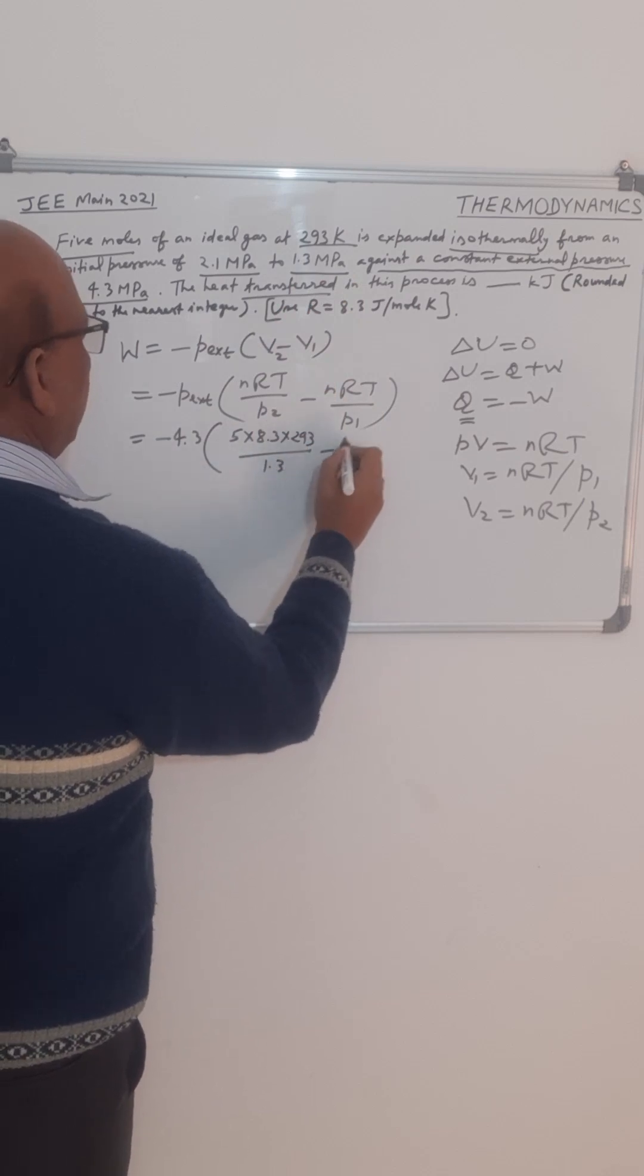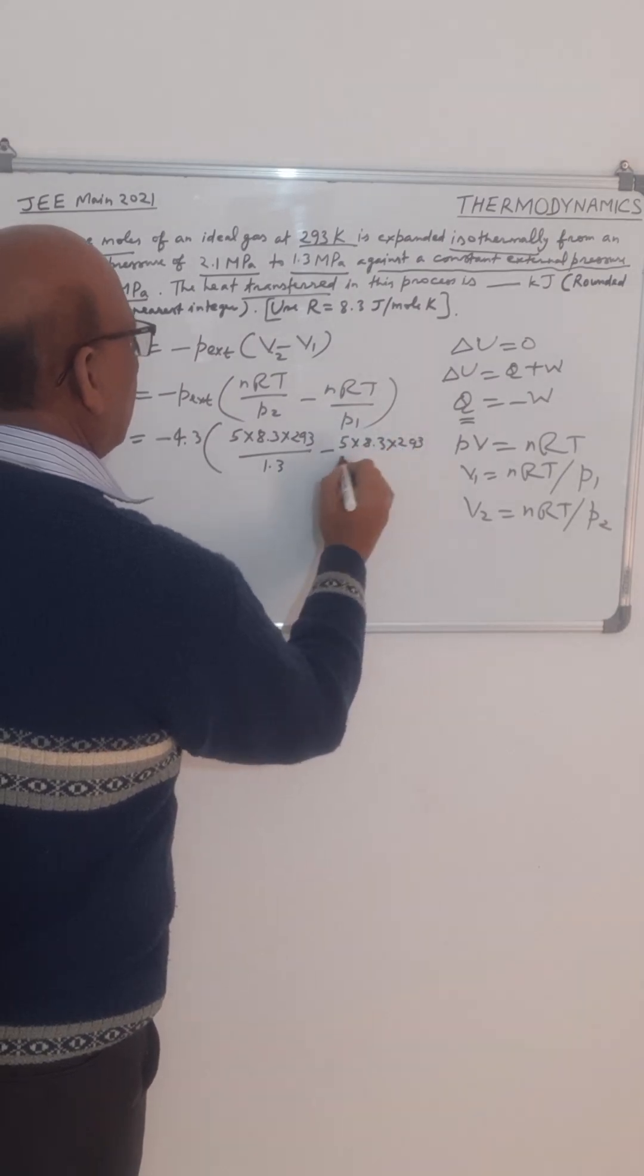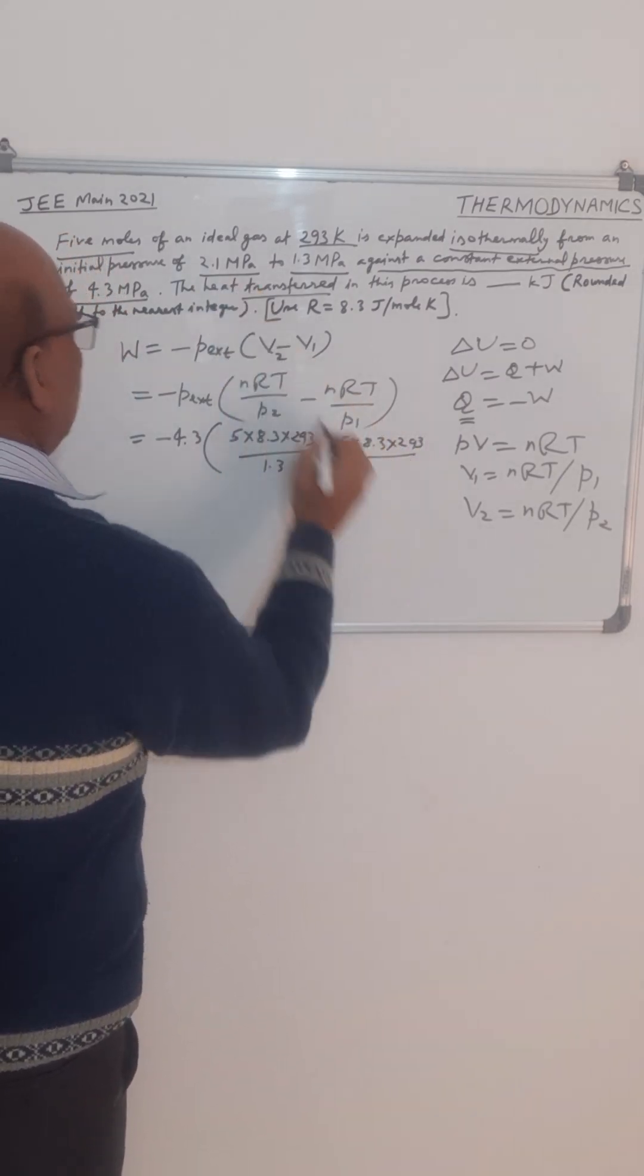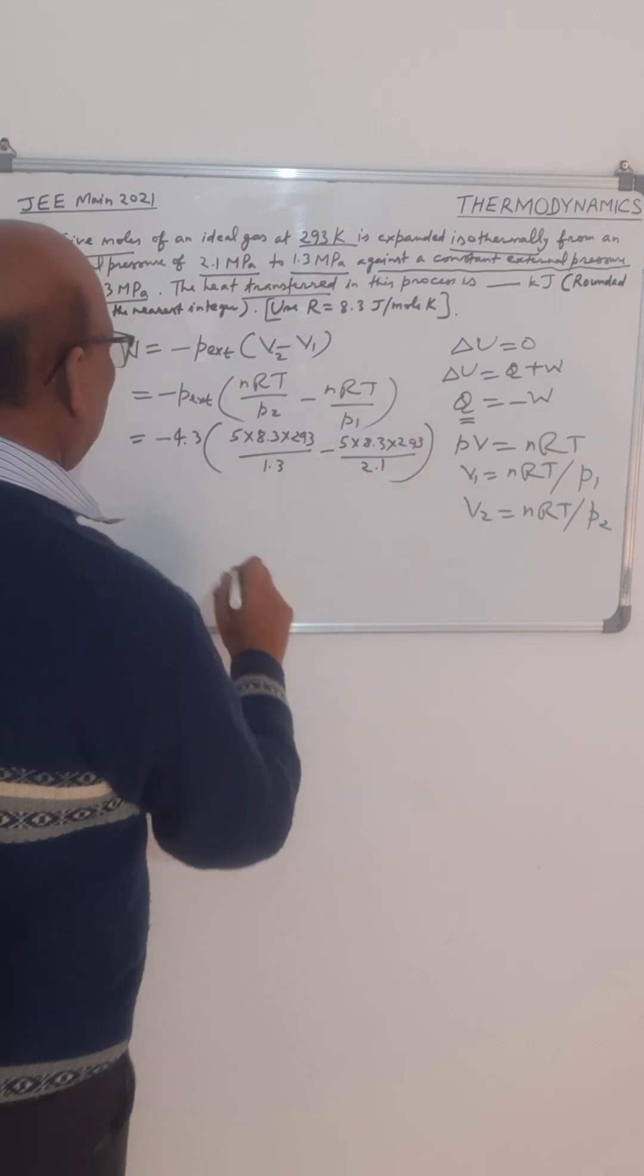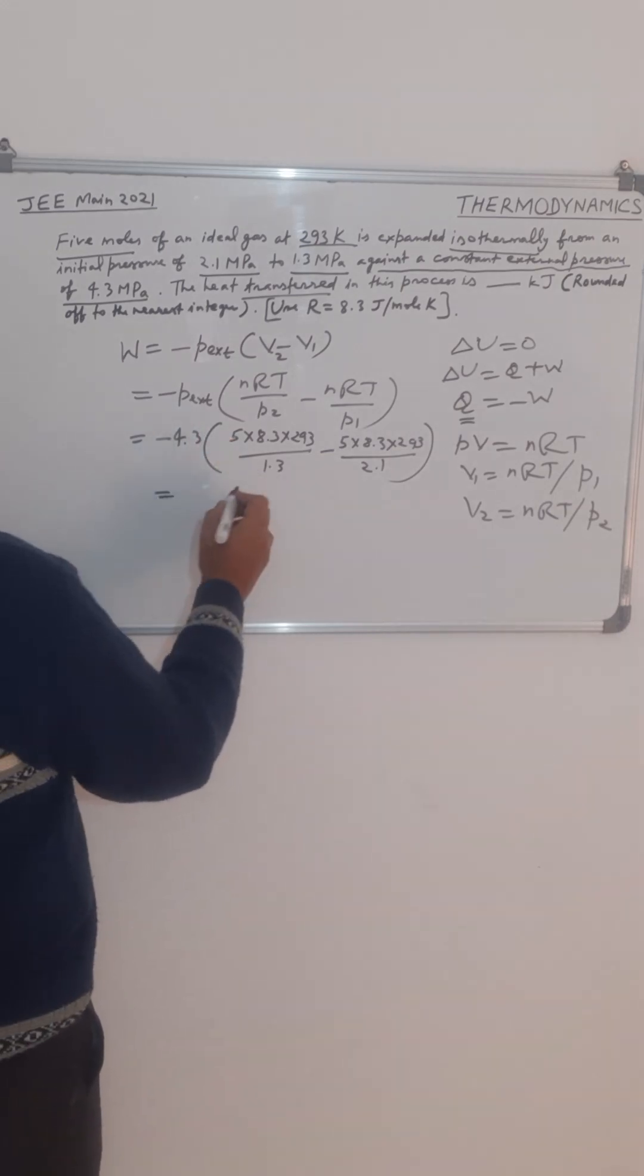P2 is the final pressure, that is 1.3 MPa, minus NRT, that is 5 into 8.3 into 293 divided by P1. P1 is the initial pressure, that is 2.1 MPa. So megapascal will cancel out from megapascal, so this unit will not matter.